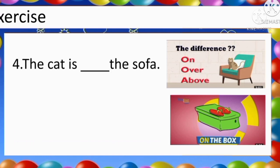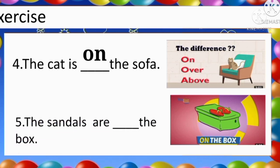Go to the next slide. Here we can see two pictures. I am asking the exercise about 'on' and 'in'. Number four: The cat is blank the sofa. Where is the cat? We can see the cat is on the sofa. Very good. Number five: The sandals are blank the box. Where are the sandals? Yes, we can see in the picture the sandals are on the box. Very good.